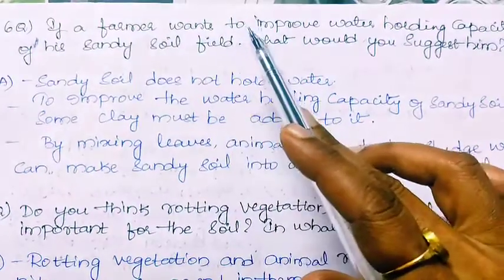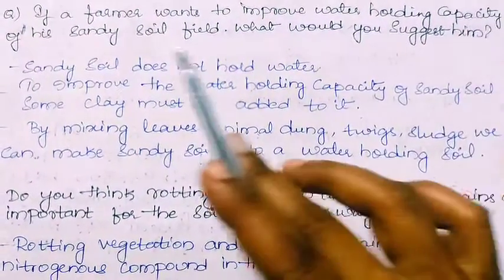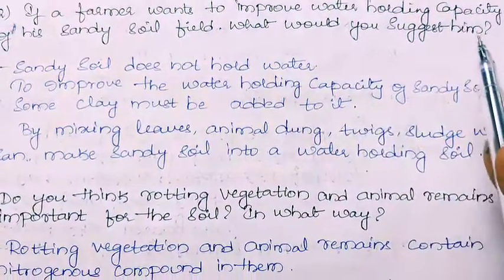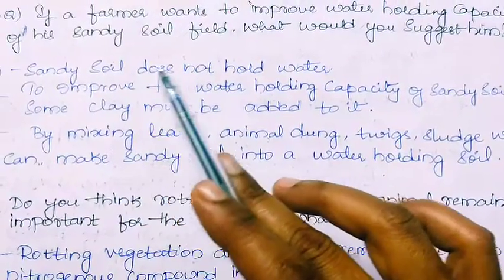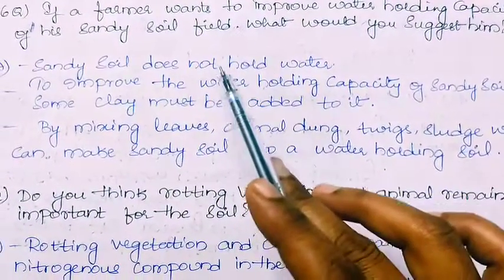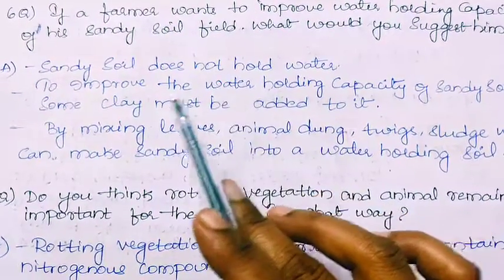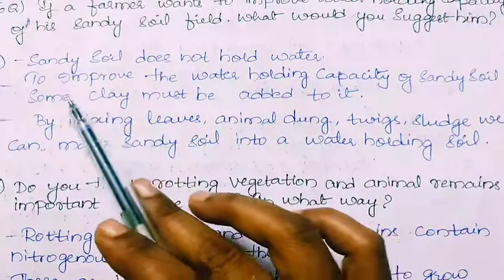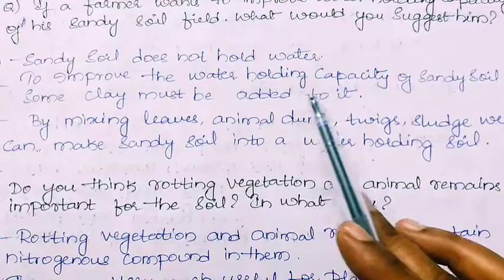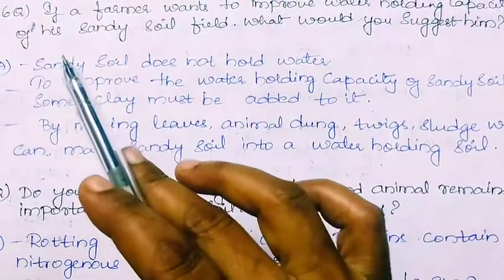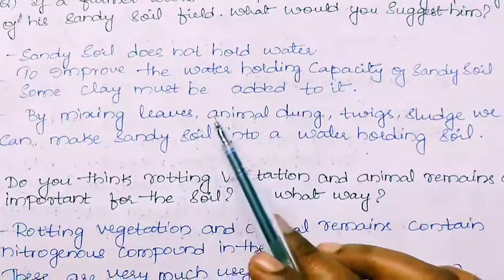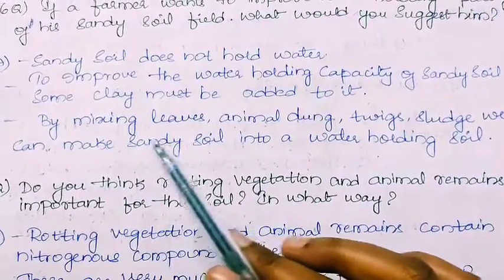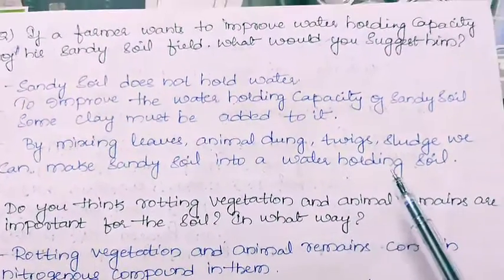Sixth question: If a farmer wants to improve the water holding capacity of his sandy soil field, what would you suggest? Sandy soil does not hold water — it has low water holding capacity because of its large pore size. To improve the water holding capacity of sandy soil, some clay must be added to it because clay has small pores compared to sandy soil. By mixing leaves, animal dung, twigs, and sludge, we can make sandy soil into a water-holding soil.